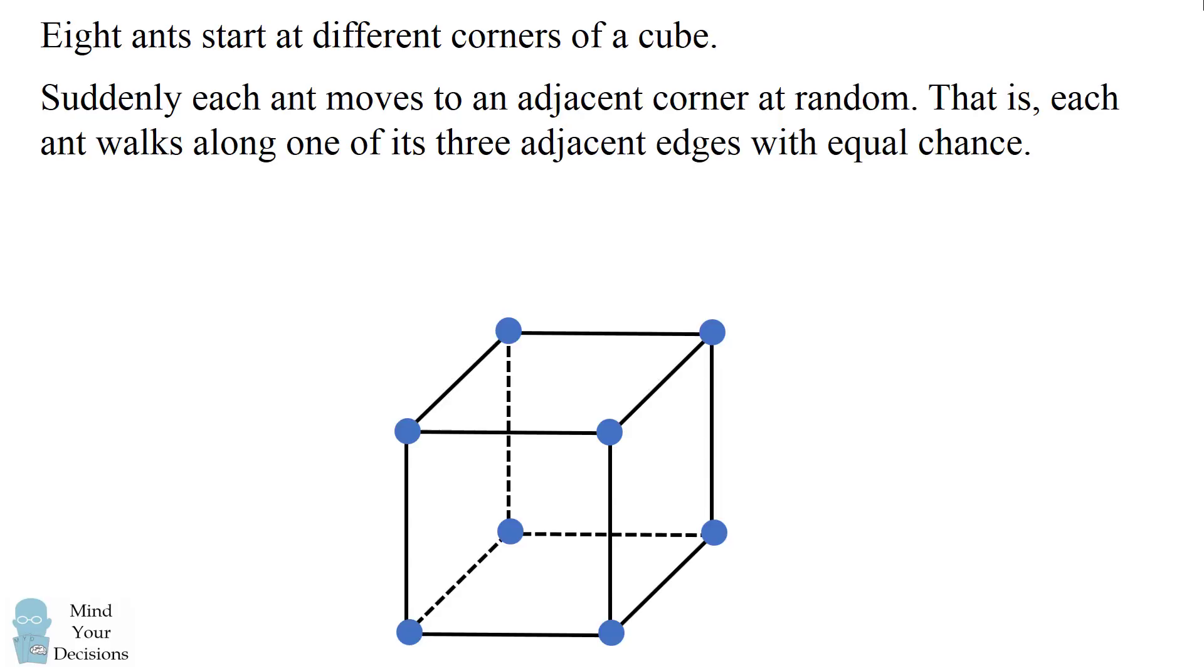Suddenly each ant moves to an adjacent corner at random. That is, each ant walks along one of its three adjacent edges with equal chance. What is the probability that none of the ants collide?